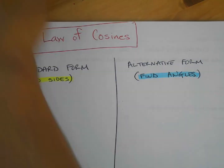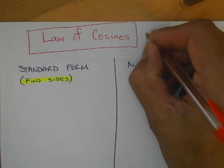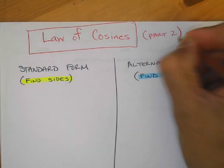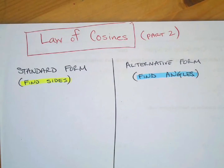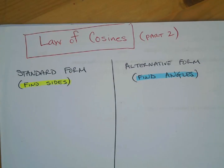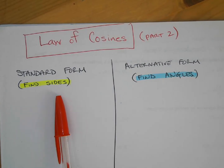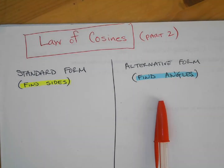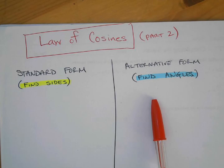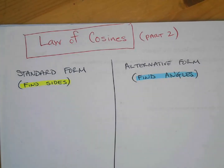Okay, Law of Cosines Part 2. You can pause it here and copy this down in your notes. You're going to see the standard form, which is what you learned in Part 1, and then you'll see how they derive the second part, which is the alternative form. Pause it, copy it down, and when you're ready, here we go.